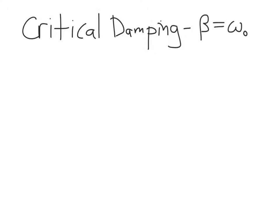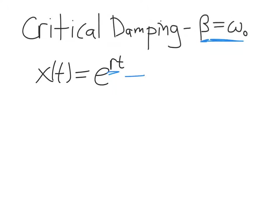Finally, we have critical damping, where the damping parameter beta is exactly equal to the natural frequency ω₀. Here the damping just manages to balance out the spring force term. When you calculate the roots for your assumed solution e^(rt), you find that both roots end up being exactly the same — both equal to beta.